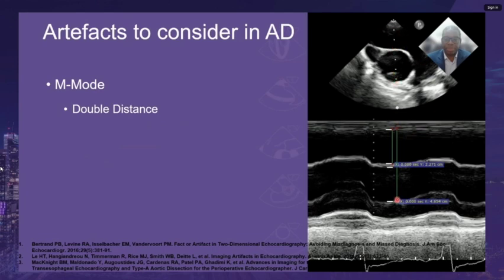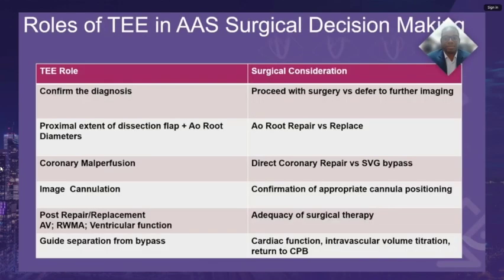In closing, we should recall that TEE has multiple roles in surgical decision making for acute aortic syndrome, including confirming the diagnosis, guiding the procedure in terms of true versus false lumen, assessing the extent of the dissection flap, evaluating coronary malperfusion or other complications, and assessing the adequacy of surgical therapy. Thank you for your time.